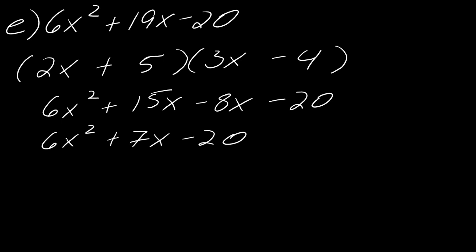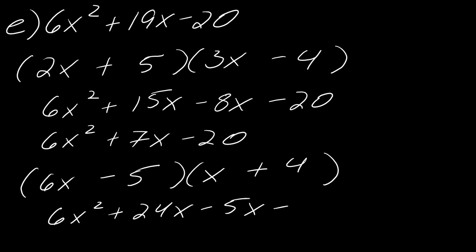So what I'm going to do is I am going to rewrite this as 6x and x. And then let's try this again. Let's try plus 4 minus 5. So I'll just mix those up. So let's see what happens if I do that. So if I do this again, I get 6x squared 24x minus 5x minus 20. And so check that out. I have 6x squared 19x and then minus 20.